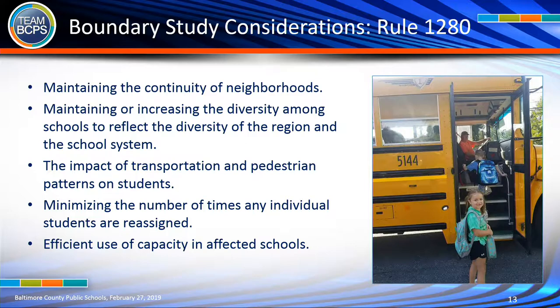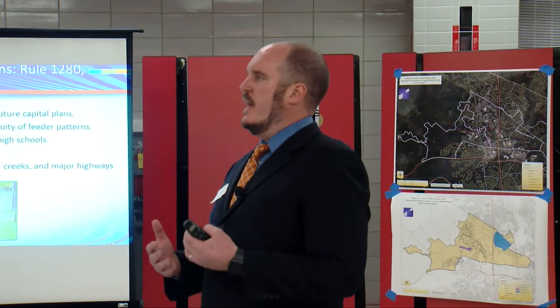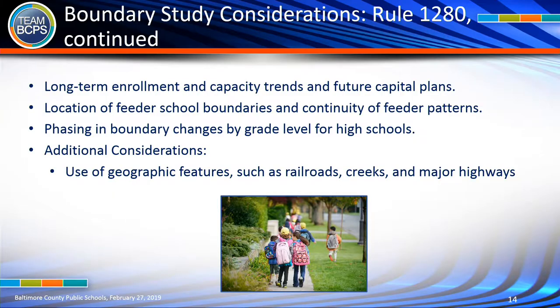Minimize the number of times any individual students are reassigned. We are studying the impacts on students and how many would be moved as a result of any option being considered. Make efficient use of capacity in affected schools and try to make things equitable in terms of how much space is available. Not only look at current students inside these boundaries, but also look at long-term enrollment projections — is one school growing and one declining? Be as proactive as possible.